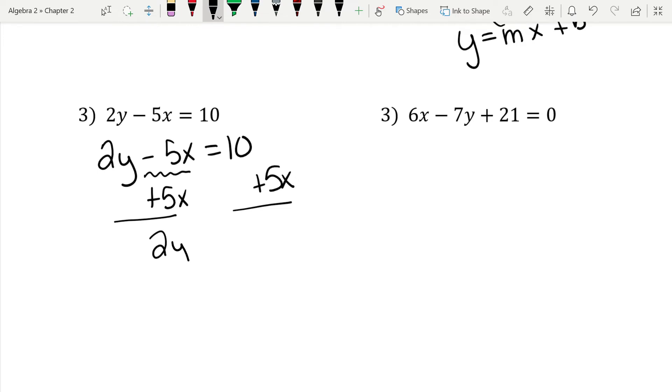Now I have 2y equals 5x plus 10. What I like about number 3 is that we're so used to seeing the x and then the y that we need to realize that sometimes it could be written this way, with the y first and then the x. But we're not done because I still need y by itself. Whenever I have a number and a letter next to each other, that means to multiply. So I'm going to divide everything by 2.